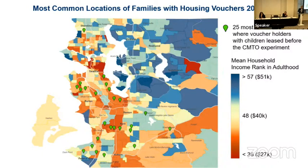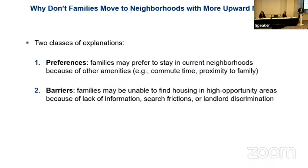This raises the research question this literature has been grappling with: why don't families move to areas that seem to have higher rates of upward mobility for their kids? You can broadly think of two classes of explanations. First, note that we've ruled out the price story in itself, since the voucher has higher value if you were to move to Bellevue, for example. So we're left with preferences-type stories — families might prefer to stay in current neighborhoods, have connections to family, shorter commutes. On the other hand, there might be barriers in the search process, lack of information, or landlord discrimination driving these different patterns.